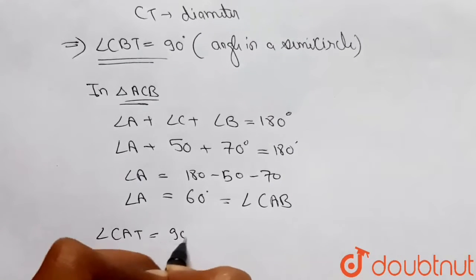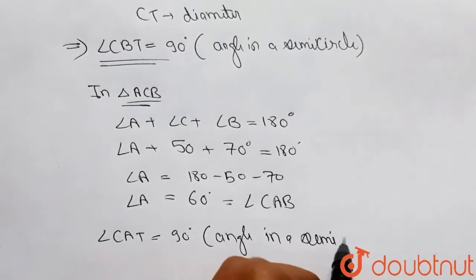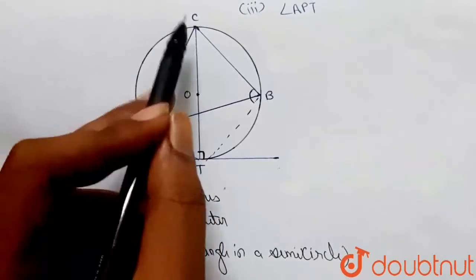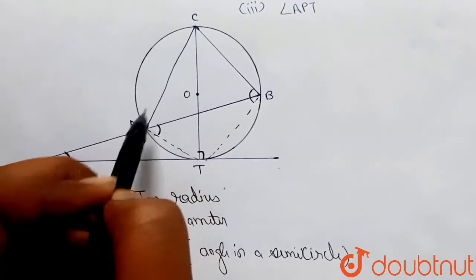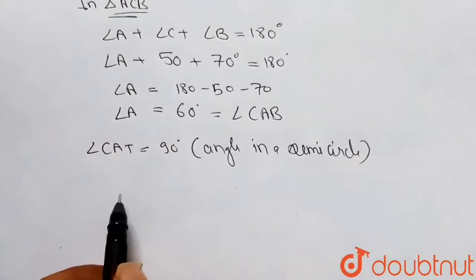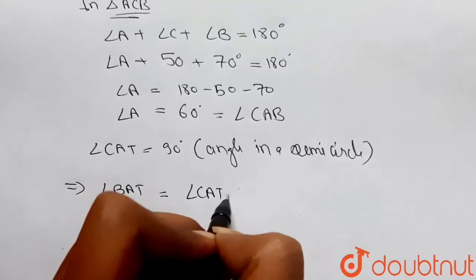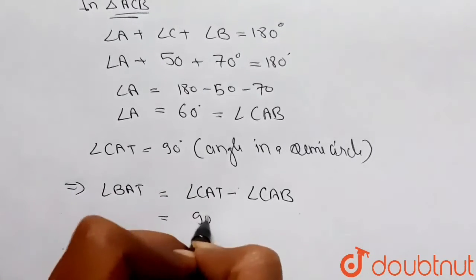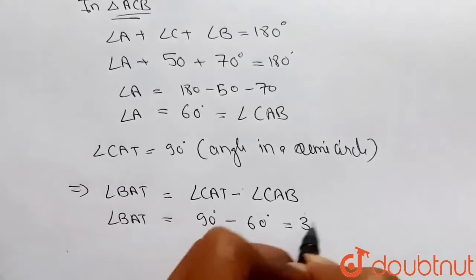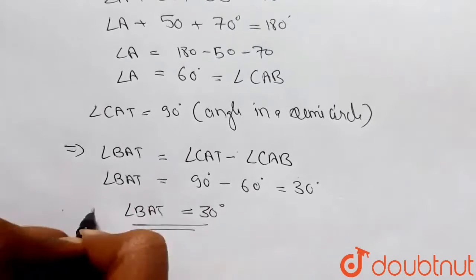Now, angle CAT is equal to 90 degrees because it is also an angle in a semicircle — since CT is a diameter, angle CAT inscribed in the semicircle is 90 degrees. Therefore, angle BAT equals angle CAT minus angle CAB, which is 90 minus 60 degrees, giving us angle BAT equal to 30 degrees.